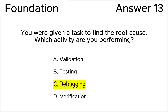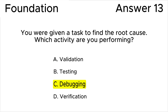Answer A is wrong because validation is confirmation by examination that a work product matches stakeholders' needs, according to the ISTQB glossary. Answer B is wrong because testing is the process within the software development life cycle that evaluates the quality of a component or system and related work products, according to the ISTQB glossary.